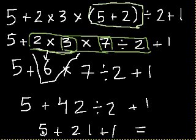So 5 plus 21 plus 1. And these are all the same levels. So we could do 5 plus 21 plus 1, or we could do 1 plus 21 plus 5. It doesn't matter. But 5 plus 21 is 26, plus 1 is 27. And we are done.